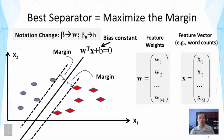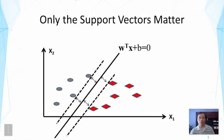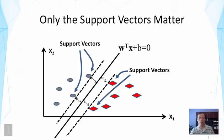When we maximize the margin, the separator is determined by only a few data points called support vectors. Here I've illustrated two support vectors for one class and two for the other. These support vectors define the margin. Once we know which points are support vectors, the central separator line is determined by them — other data points don't really affect the margin or the separator. That's why this method is called a support vector machine.